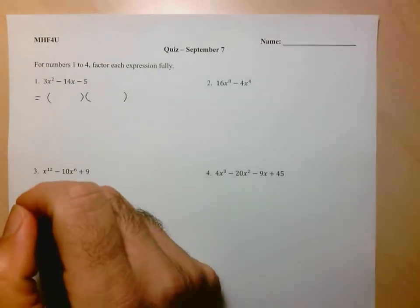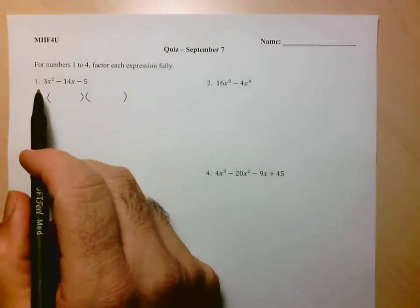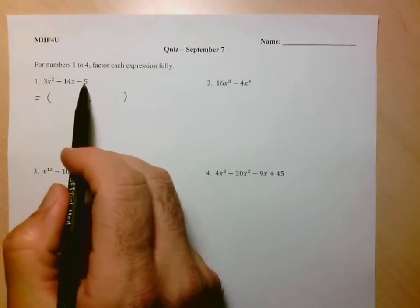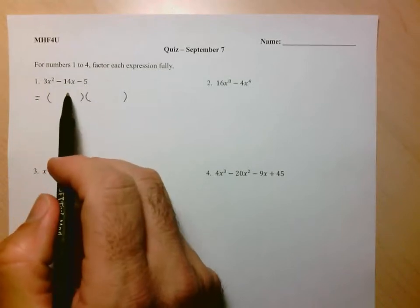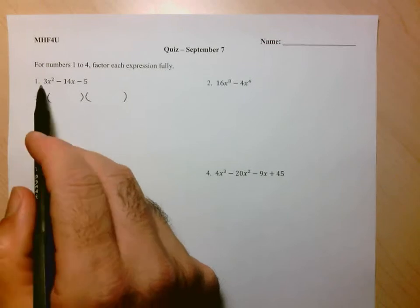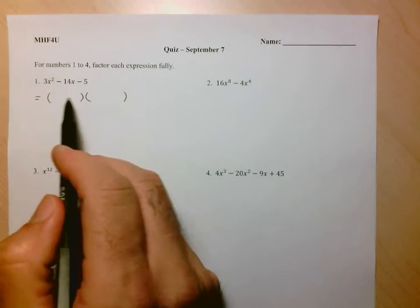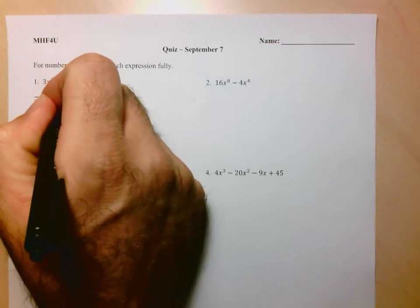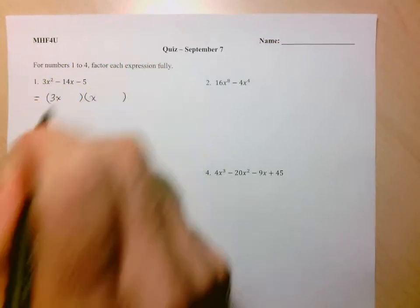So we see a trinomial, so we're going to try to factor this as the product of two binomials. Now as I've suggested before, I'm going to suggest you don't use decomposition to do this, especially since looking at those two terms, the 3 and the negative 5, since they're prime, makes things a lot easier. So you know that in order to get 3x squared, that's going to be the product of these two terms. So we know we have to have 3x and x.